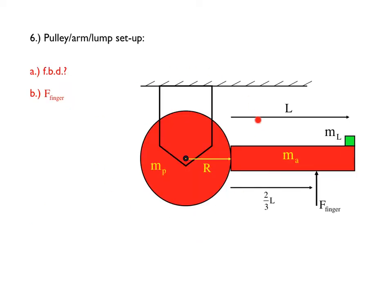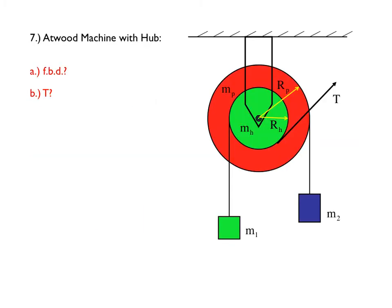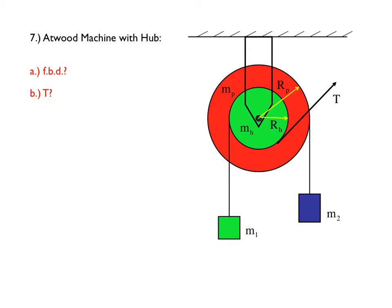This is a problem that's similar, a problem that you actually saw a video on back a ways. Pulley, arm, lump sitting attached to it. Finger is holding the system in equilibrium. Remove the finger. Body starts staying, going to accelerate. Here are the questions. This is a twist on an Atwood machine. Here you have a pulley, and there's a hub attached to it. One of the masses has a string wrapped around the hub. A second string is wrapped around the pulley with a mass attached to it. There's a line attached to the hub that's applying a force that's keeping everything in equilibrium. You remove the line that's producing the equilibrium. What's the system's acceleration, etc.